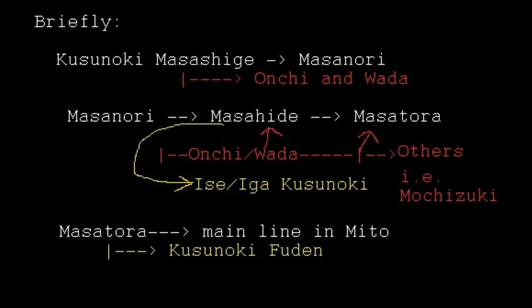This line obviously doesn't list everybody. Kusunoki Masanori is Masashige's son, but there are people that come between Masanori and Masahide, and between Masahide and Masatora. The white line is a very brief, reduced overview — many generations are skipped — but it gives you an idea of the main line.